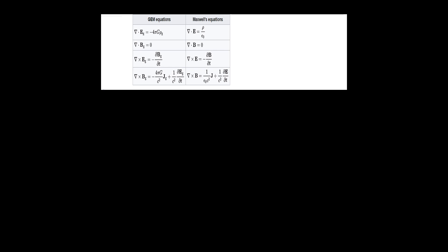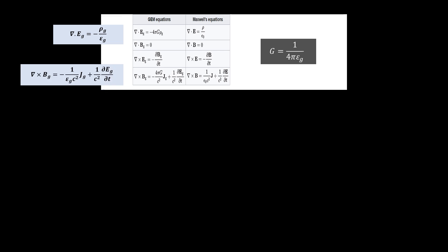In that case, we can also write the gravitational constant G as 1 over 4 pi epsilon subscript g to indicate that we are referring to gravity. So the first Maxwell's equation for gravity can also be written as the divergence of Eg equal to rho g over epsilon g. And the fourth Maxwell's equation written as follows.